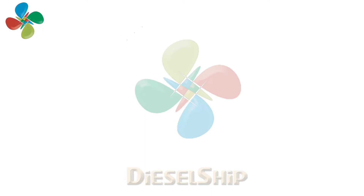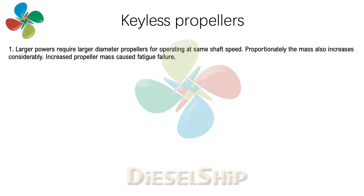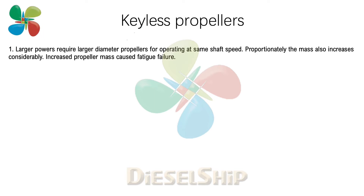Let's look at the evolution of keyless propellers. Large powers required large diameter propellers operating at the same shaft speed. Proportionately, the mass also increased, and increased propeller mass causes fatigue failure — a constant on-and-off kind of stress caused as the propeller turns through the water. Propeller mass can vary from 5 tons to 50 tons, and that mass hung on one end of the shaft causes real stress on the shafting and even the transmission systems.